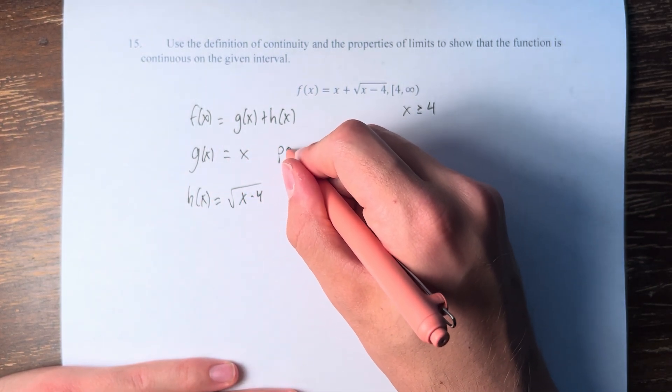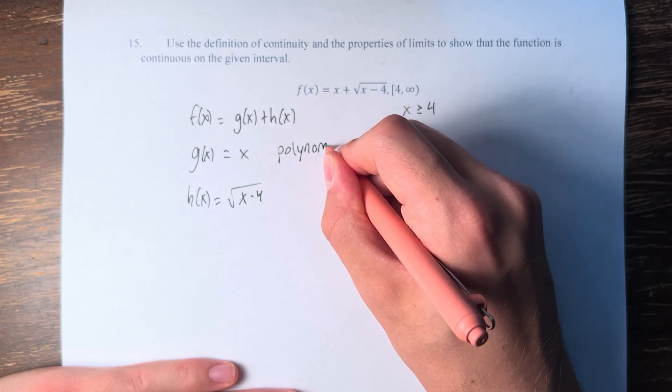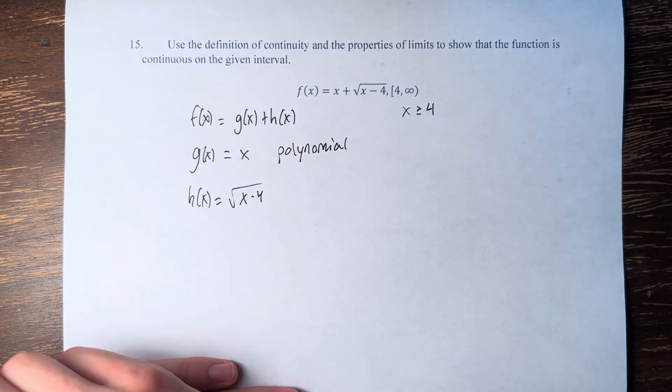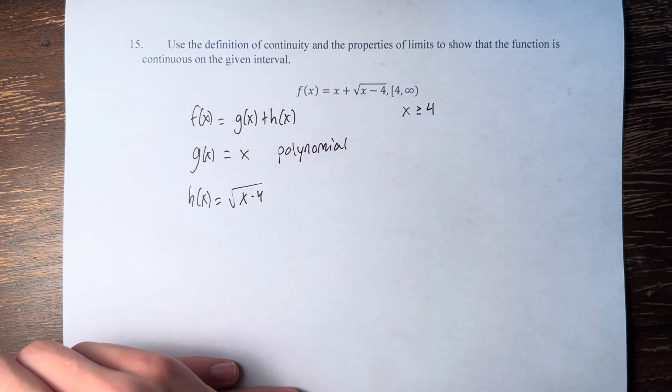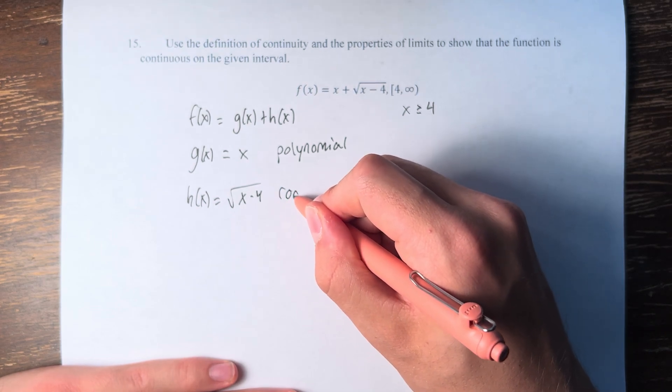g of x is equal to x is a polynomial. It's a degree 1 polynomial, so you might not think of it that way, but it is a polynomial. And h of x is a root function.